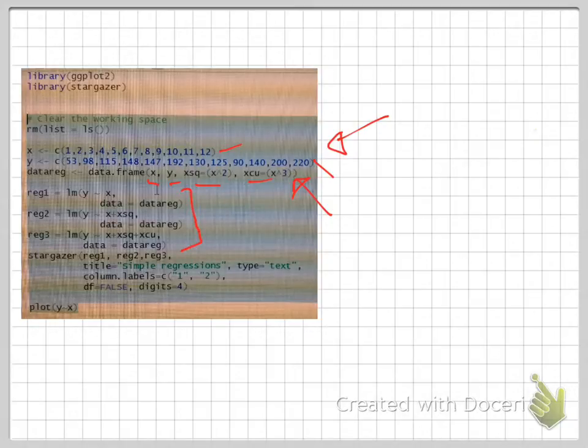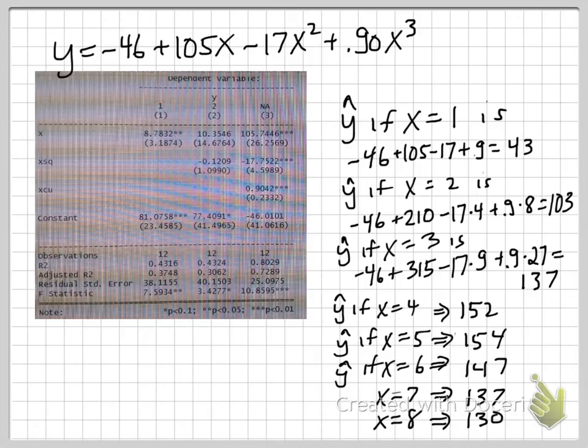And then we run regressions. We run three regressions, one with just x, one with x and x squared, and one with x, x squared, and x cubed as the explanatory variables. All three have y as the outcome variable. And then we use Stargazer to display the regression results.